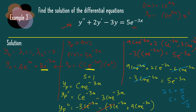So our yp is equal to 5 over 2 times x e minus 3x. And our general solution — combining yh and yp — is y equal to a exponent x plus b e minus 3x plus 5 over 2 times x e minus 3x.